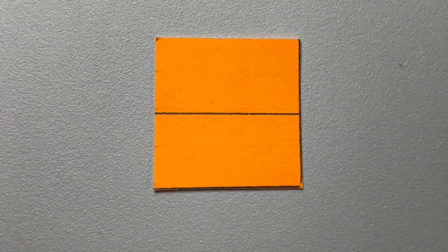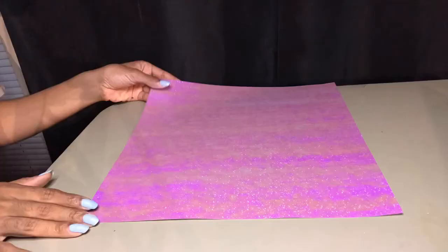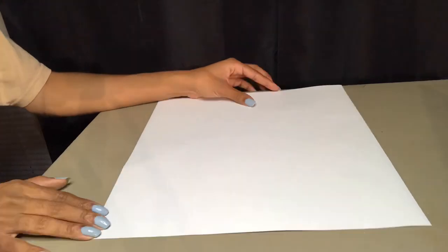Here's a closer look of the one by one inch square with the fold line in the middle. Now you're going to flip over the paper and use your template to trace out each square.